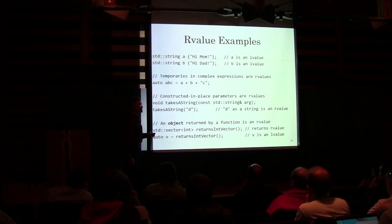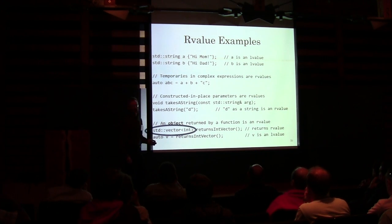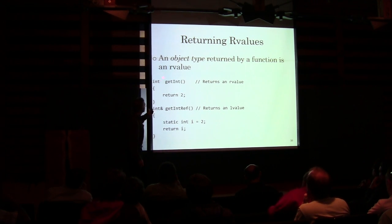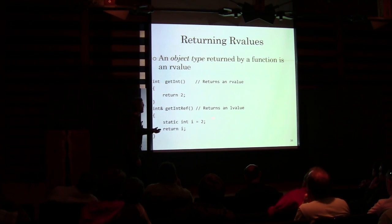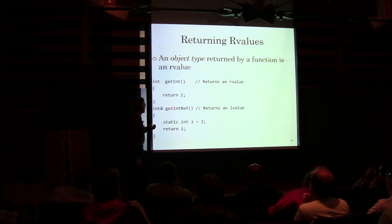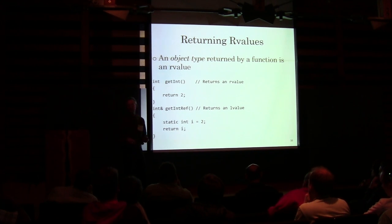If a function returns an object, that object is an R-value. So here we've got two functions: GetInt returns an int — int is an object, so that's an R-value. GetIntRef returns an int reference — that's not returning an object, so the returned int ref is not an R-value. That's an L-value.